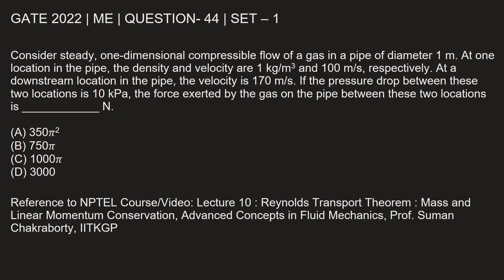Let us find out. Let this be a schematic diagram of this pipe. So diameter of the pipe is given as 1 meter. Let this be location 1 and this be location 2.